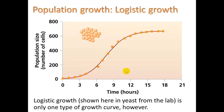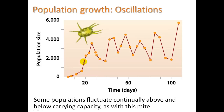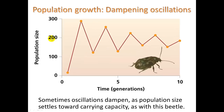Here we see data of yeast growing in a test tube. Their population cannot grow exponentially — at some point they reach a limit and begin to use up their energy supply. This is one model for logistic growth. Other models can fluctuate, like with these mites, always oscillating around a carrying capacity of around 4,000. Another model shows dampening oscillations, like with this beetle — they increase, then their food source runs out, grows back, runs out again, and they may eventually arrive at a more stable population near carrying capacity.